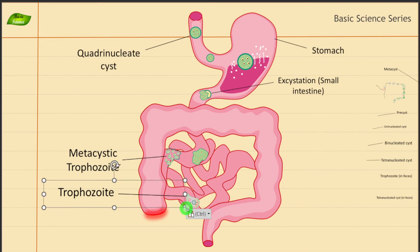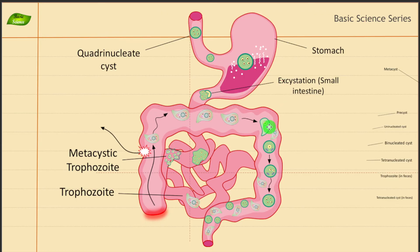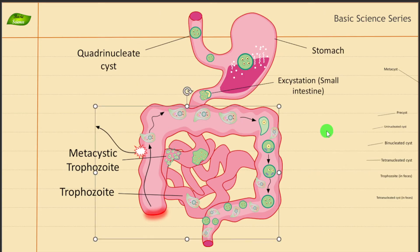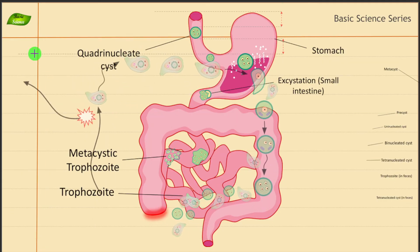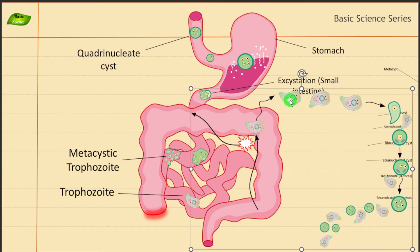The trophozoite form is maturing inside the small intestine. You can see how all these things come together giving us the final image of the entire life cycle. Now after that, the trophozoite moves into the large intestine, the ileocecal region. You can see it converting into a uninucleated cyst, then a dinucleated cyst, and finally a tetranucleated cyst — that is what is happening.